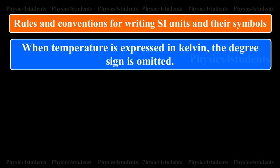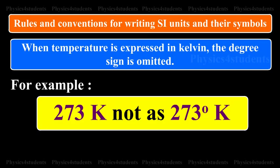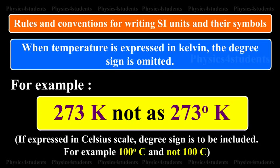When temperature is expressed in Kelvin, the degree sign is omitted. For example, 273 K not as 273 degree K. If expressed in Celsius scale, degree sign is to be included. For example, 100 degree C and not 100 C.